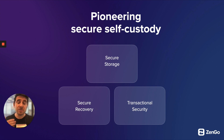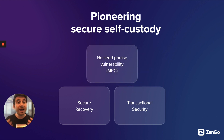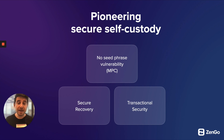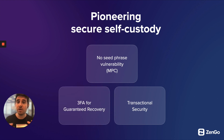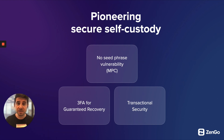Let's discuss how Zengo approaches these three pillars. In terms of secure storage, Zengo has no seed phrase vulnerability — no writing down those 12 to 24 words that traditional wallets have. Instead, we use something called MPC, which stands for multi-party computation. Because there's no single point of failure in the Zengo ecosystem, it's much more difficult for someone to access your wallet and steal your assets. Since Zengo has no seed phrase, we use a three-factor authentication process for recovery, which we'll cover shortly.